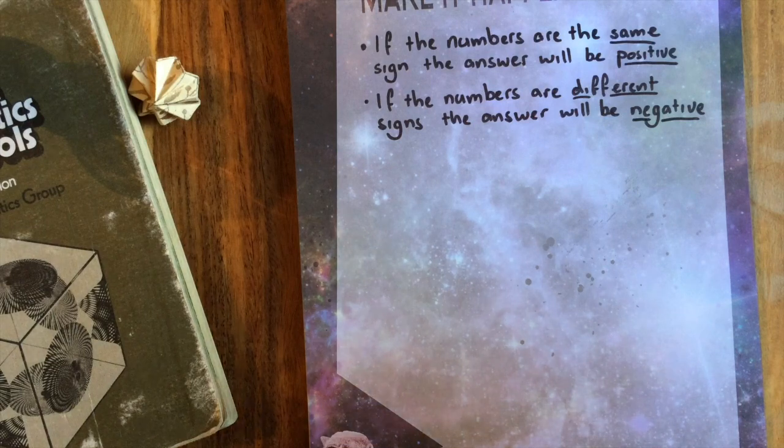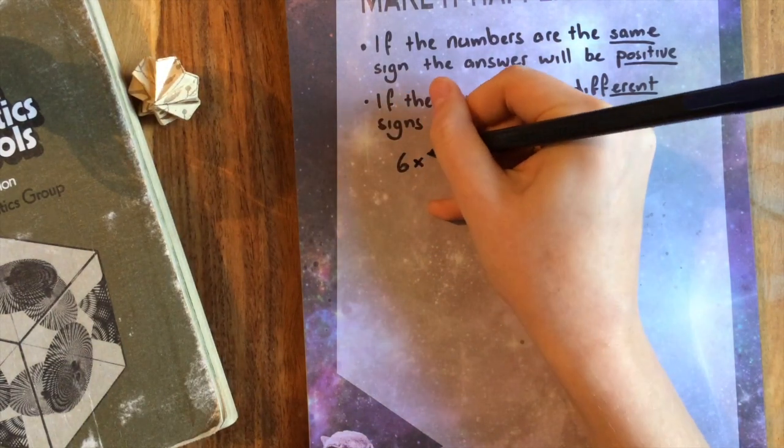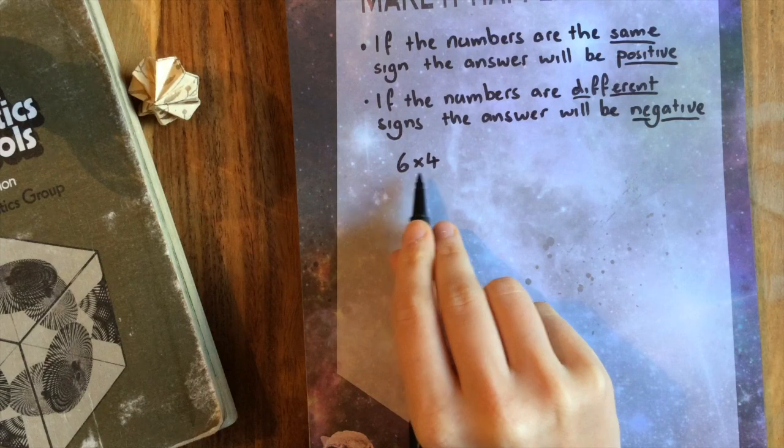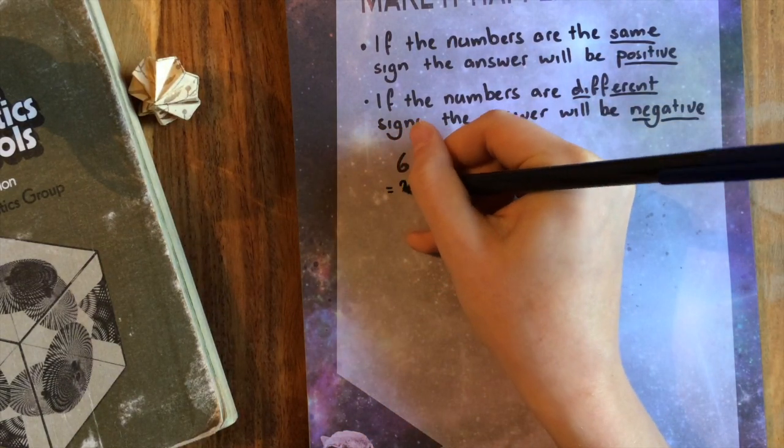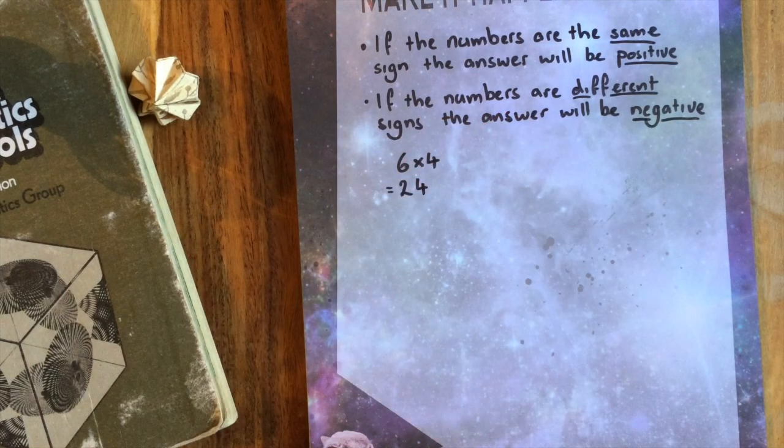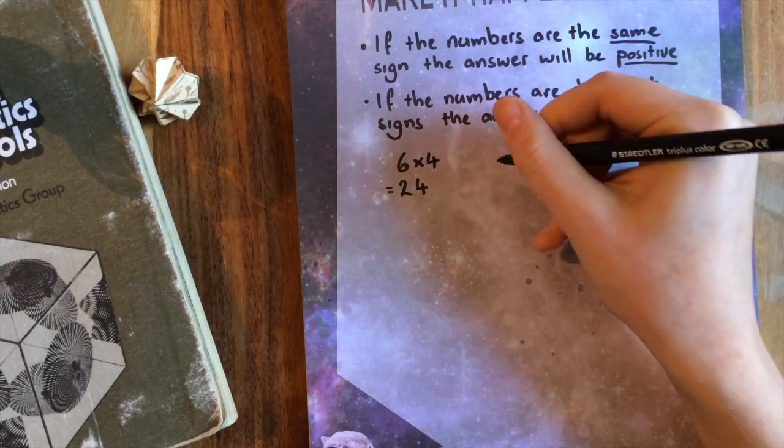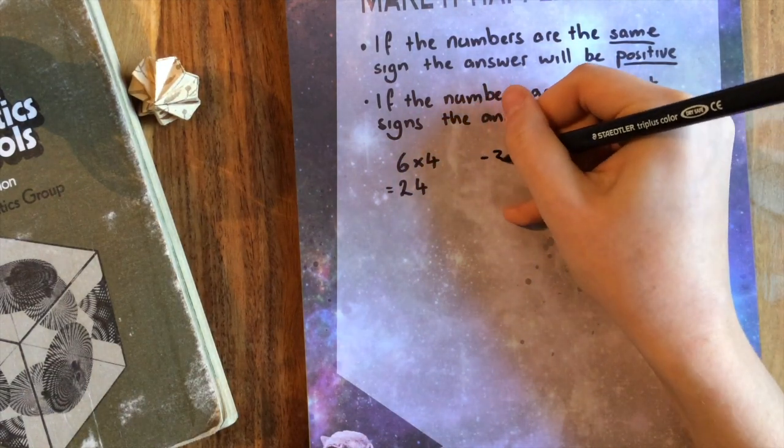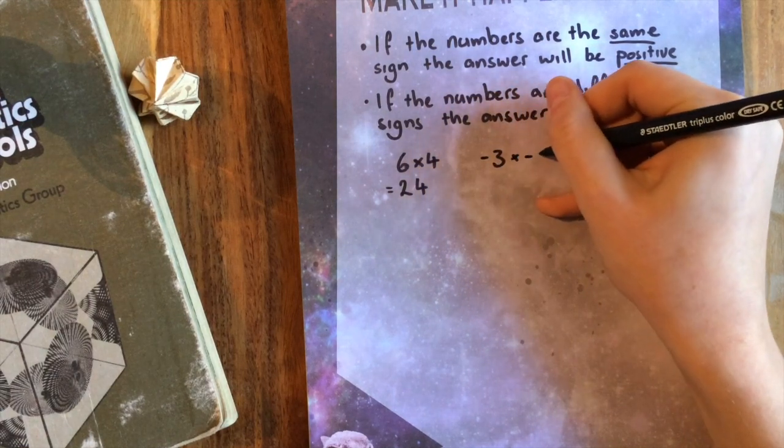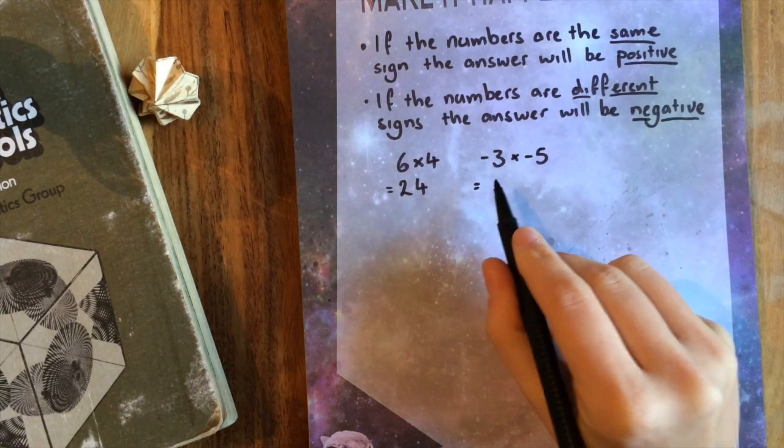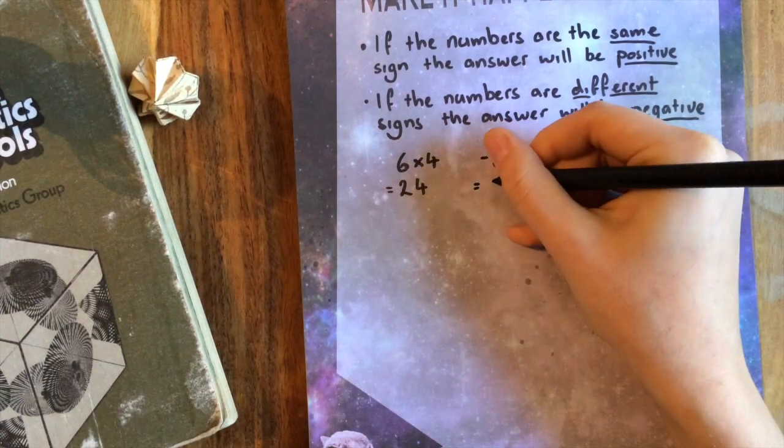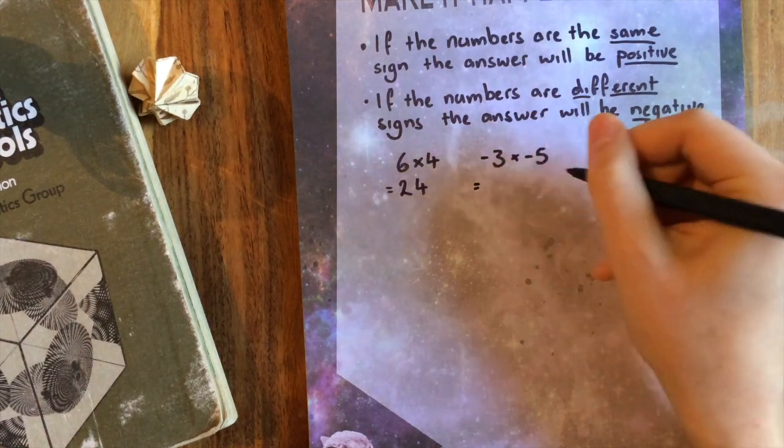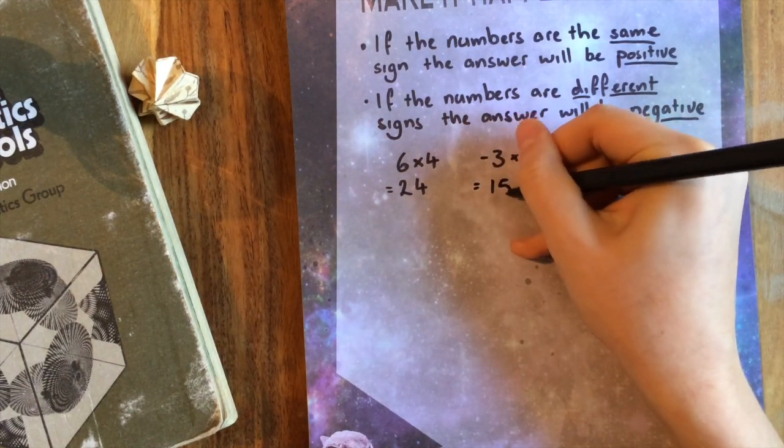We already kind of know this, because if we did something like six times four, well, both of these are positive, they're the same sign, the answer will be positive. And we already know, it's 24, it's positive. But if we had something like negative three times negative five, okay, so these two numbers have the same sign, the answer will be positive. And the number part's just the same, three times five is 15. So we get 15.